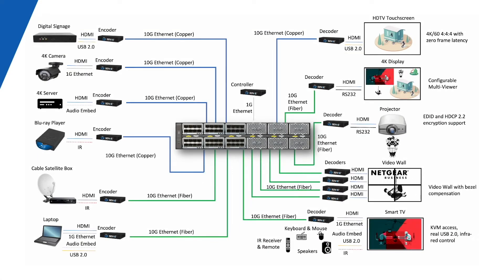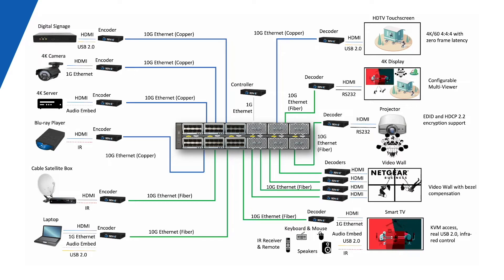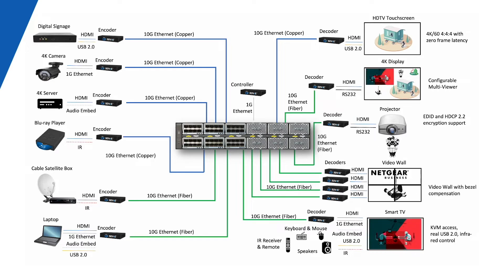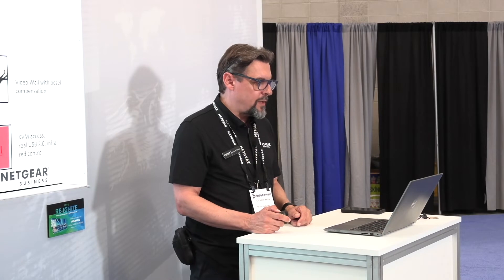What is the typical SDVoE use case? When it's a single-switch installation, things are very easy because the network switch is your fabric. You have AV sources on the left connected to encoders that packetize AV into IP packets through the network fabric, and displays and destinations on the right connected to decoders that receive those streams. AV over IP and SDVoE is really plug-and-play when it's a single switch.